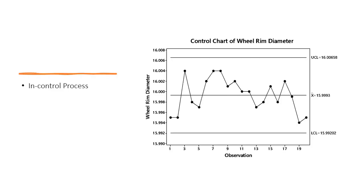When a process is in control, the process data on a control chart look like this: the points are randomly distributed around the center line with all points falling within the control limits.